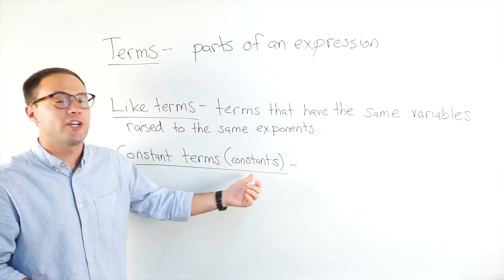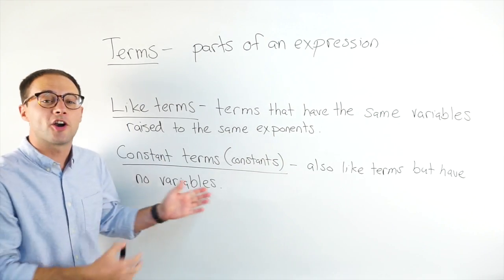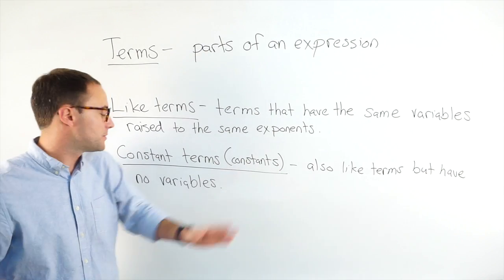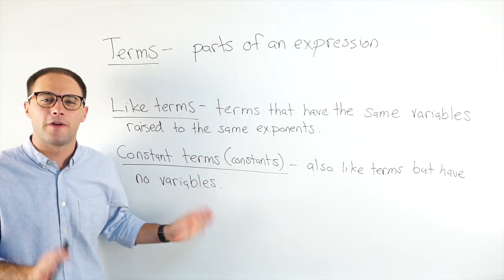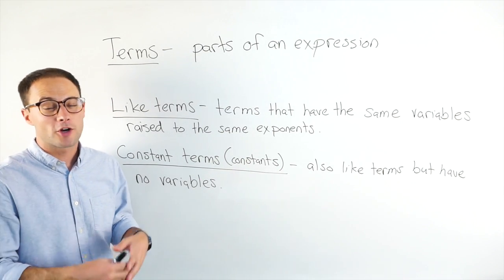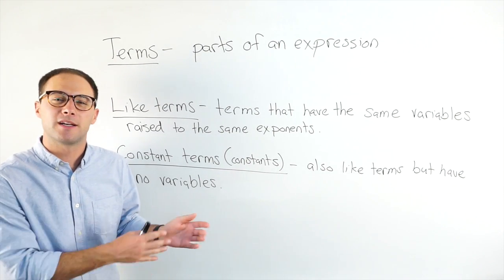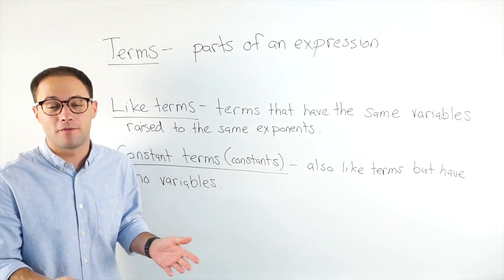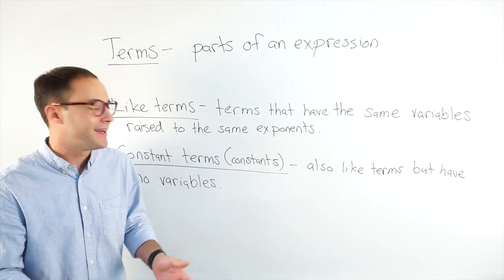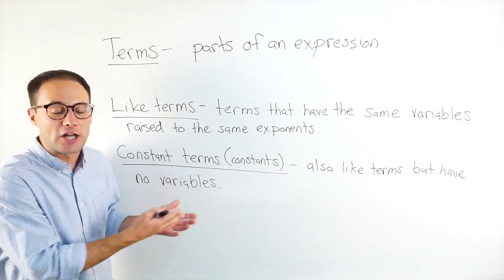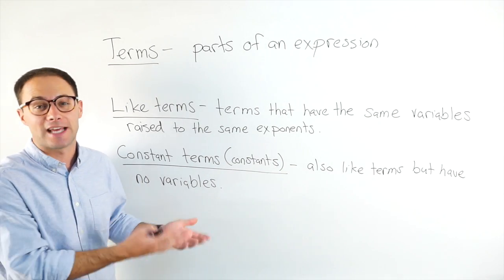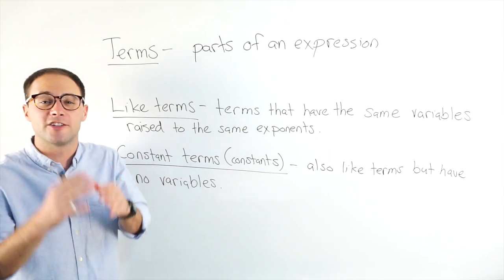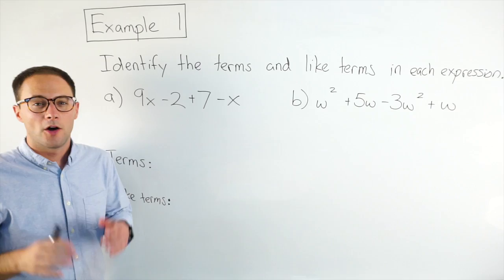The last word is constant terms, or just constants. Constants are also like terms, but they have no variables. They're called constants because no matter what the value of the variables are, they stay constant — they stay the same. Now let's get into our first example.